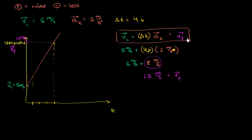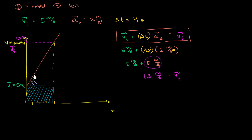Now the next thing I want to talk about is what is the total distance that we would have traveled. We know from the last video that distance is just the area under this curve. We can use simple geometry to break it down into two different areas that are easy to calculate: this blue part — a rectangle — and this purple part — a triangle. That will be the total distance we travel.